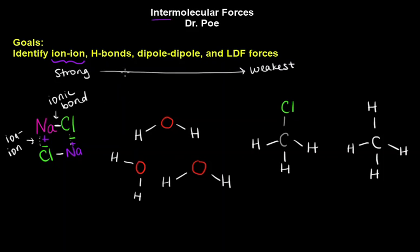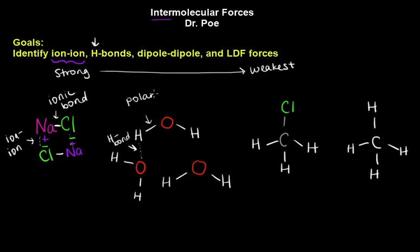The next strongest is hydrogen bonds — I abbreviate those H-bonds. These occur between molecules and involve hydrogens. Specifically, in covalent molecules — if it's ionic it uses ion-ion — we have a polar bond between oxygen, which is electronegative, and hydrogen. When this polar bond with this polar hydrogen interacts with another electronegative atom as part of another molecule, that makes a special bond called a hydrogen bond, or H-bond.